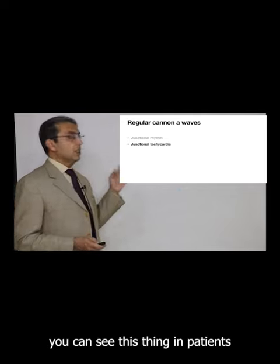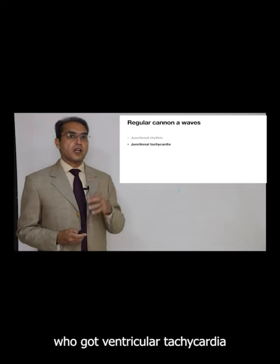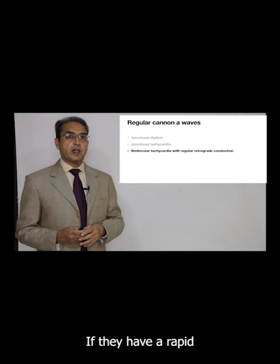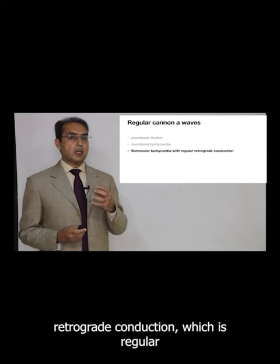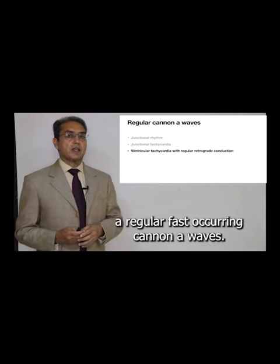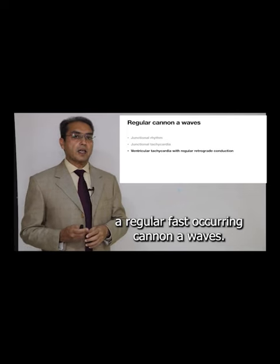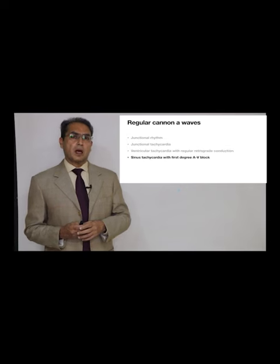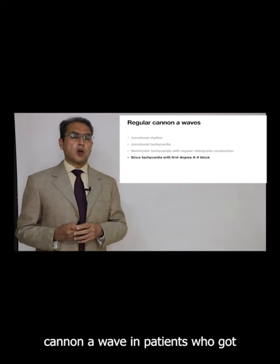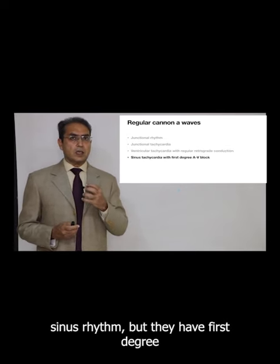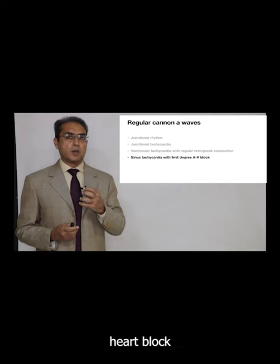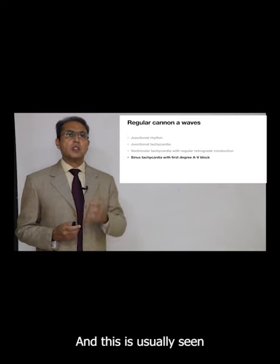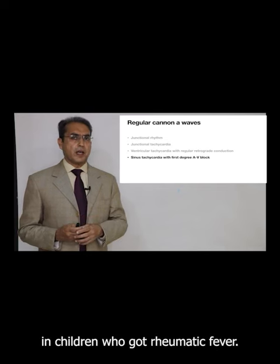Similarly, you can see this in patients who have ventricular tachycardia with retrograde conduction. If they have rapid retrograde conduction which is regular in ventricular tachycardia, you can find regular fast-occurring Canon A waves. You can also see Canon A waves in patients who have sinus rhythm but with first degree heart block. In those patients Canon A waves can be seen, and this is usually found in children who have rheumatic fever.